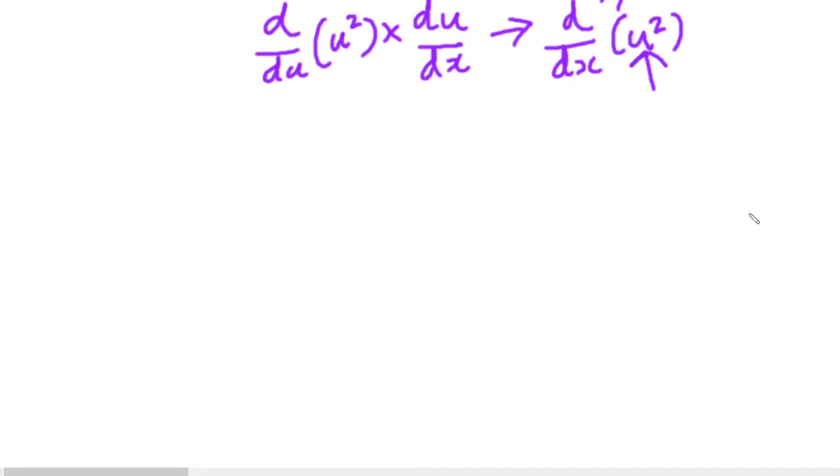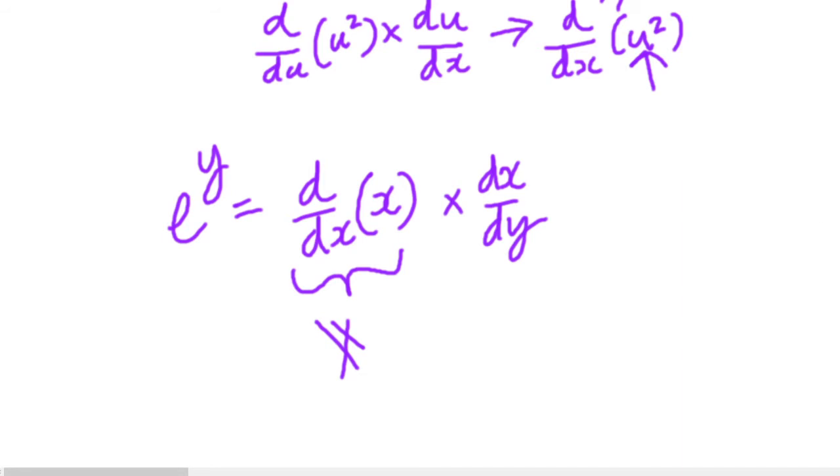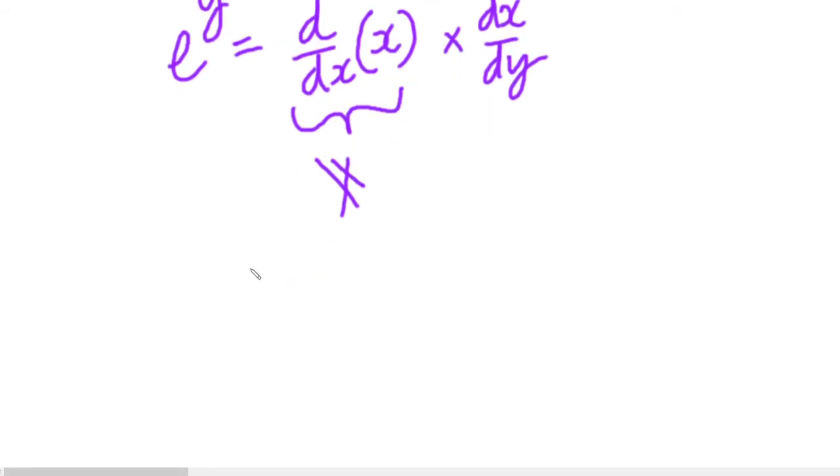So if we move this down here, e to the y is equal to d by dx of x times dx over dy. And given that the differential of x with respect to x, or this term, is just 1, then we can remove it from our multiplication and ignore it, because 1 times anything is anything. e to the y is equal to dx over dy. Now I want you to think about what dx over dy actually means for a moment, because our goal is dy over dx.